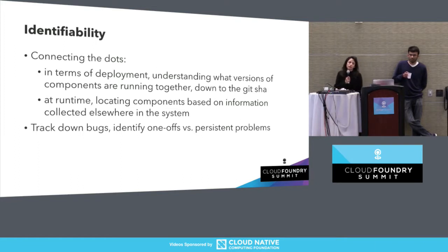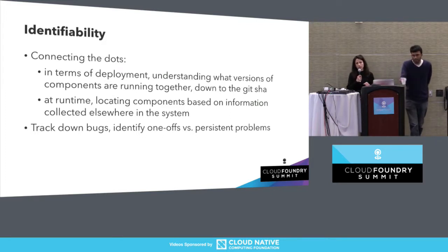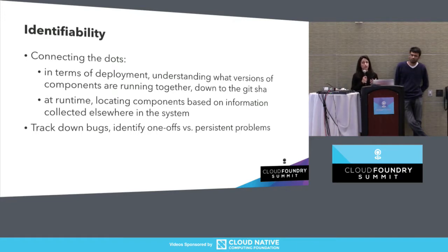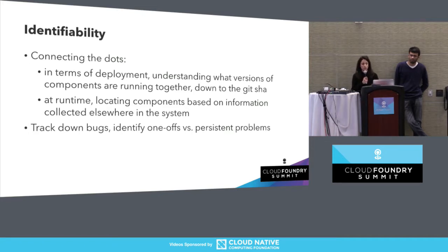In terms of a deployment, operators would like to understand what versions of components are running together, down to the git SHA that the developer shipped to finish their feature work, or the operating system version, or the version of the dependency packaged with the source code. At runtime, identifiability means locating components based on information collected elsewhere in the system — for example, if you have a problem on a VM, do you have enough information to track it down to a specific version of a dependency? This speeds up tracking down bugs and identifying problems affecting a whole deployment versus one specific machine.